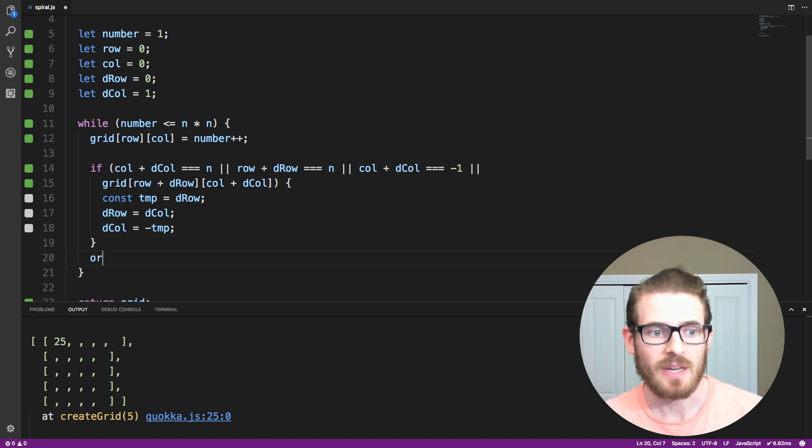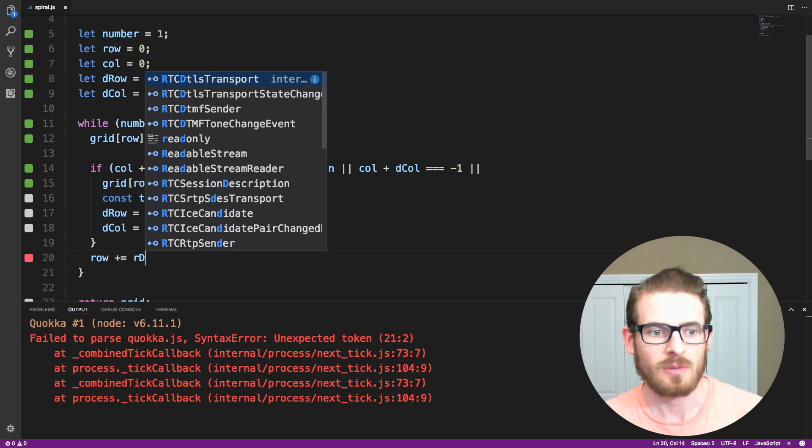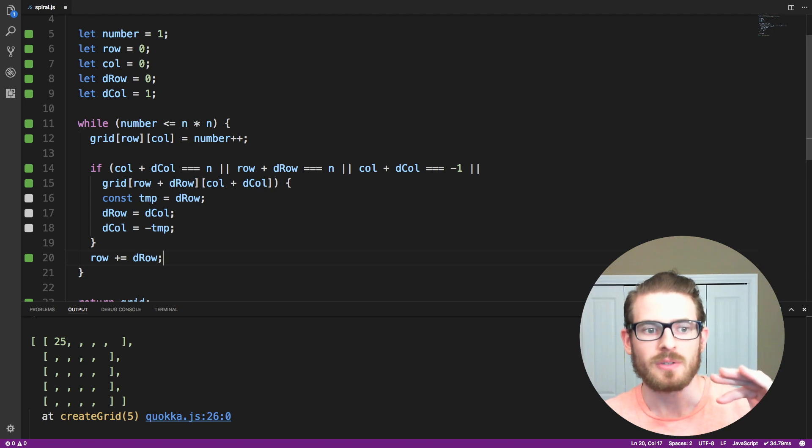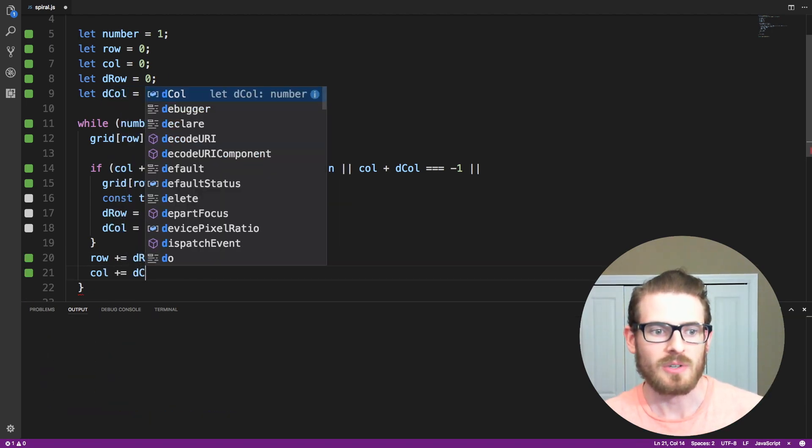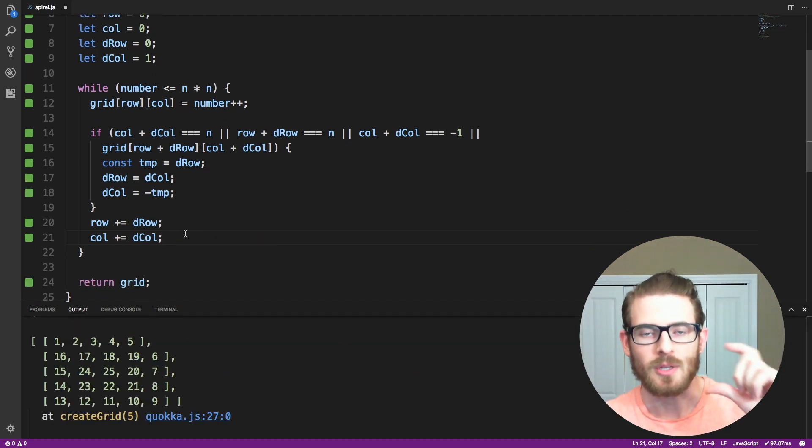And then lastly, we just need to increment row by the direction of the row that we're trying to go. So row plus equals drow, which will increment our row in the correct direction. And then same thing with column, we can just say column plus equal dcolumn, which will increment column in the correct direction.